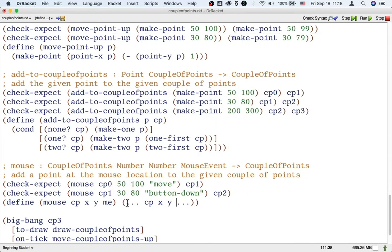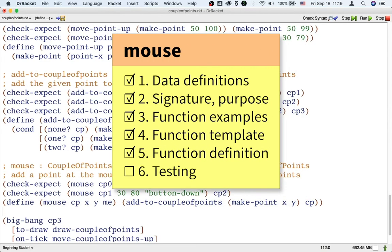And now, we just need to figure out how to add a point, add x and y, to CP. Well, we already have a function for doing that. That's add-to-coupleofpoints. So, we're just going to use that. Now, whenever we use a function, we have to pay attention to its signature. It needs a point and a couple of points in that order. So we better not just give it these three inputs, because that's the wrong number and wrong order of inputs. Instead, we need to give it a point, which we can make using make-point, followed by a couple of points. Okay. So, that's now a mouse function.